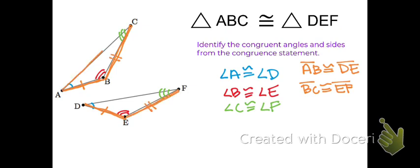And then lastly, AC. AC is using the first and the last letter when labeling triangle ABC. So it corresponds and is congruent to the side that uses the first and last letter in triangle DEF, since those two triangles are congruent. So AC is congruent to side DF.